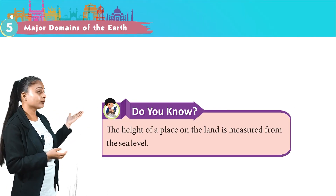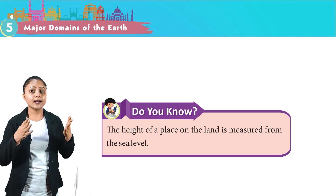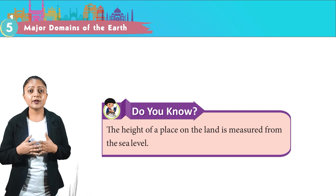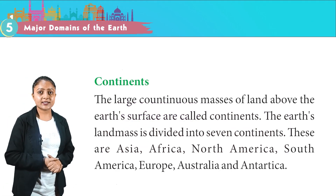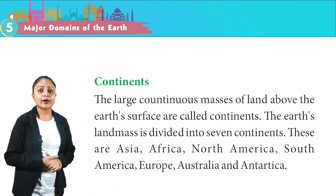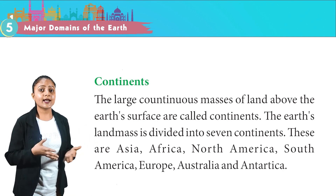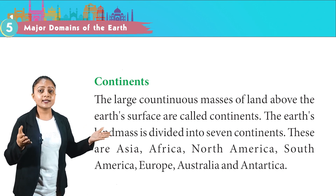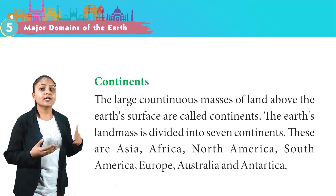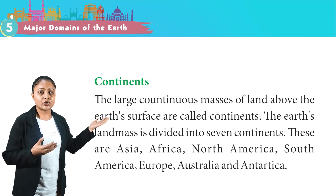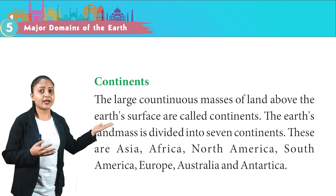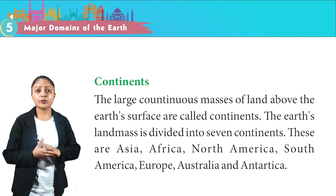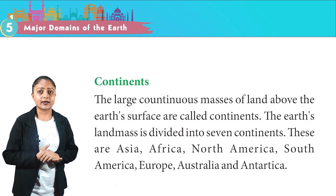Do you know? The height of a place on land is measured from the sea level. The large continuous masses of land above the Earth's surface are called continents. The Earth's landmass is divided into seven continents: Asia, Africa, North America, South America, Europe, Australia and Antarctica.